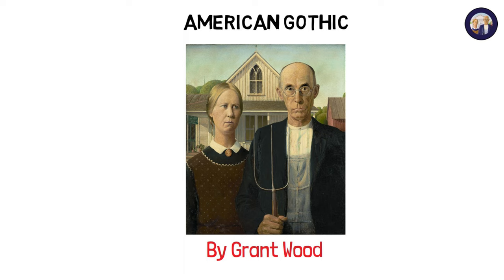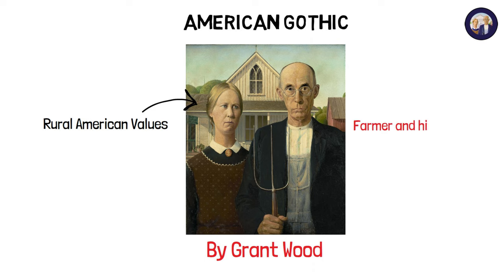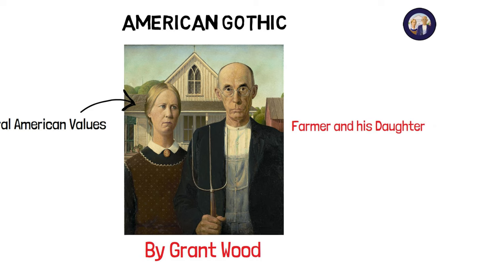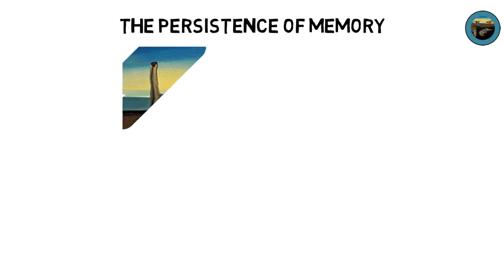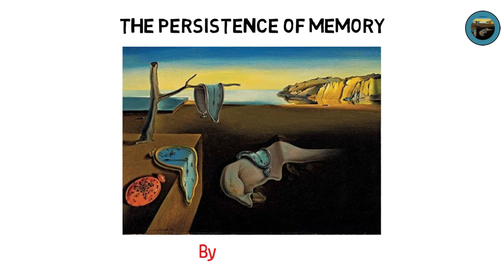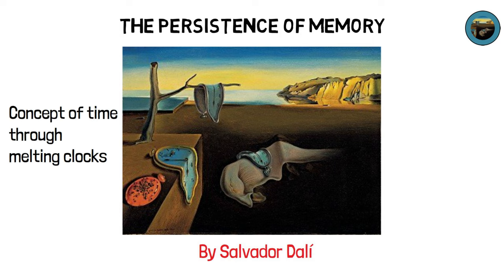American Gothic by Grant Wood, a regionalist painting symbolizing rural American values, known for its iconic portrayal of a farmer and his daughter. The Persistence of Memory by Salvador Dali, surrealist imagery exploring the concept of time through melting clocks.